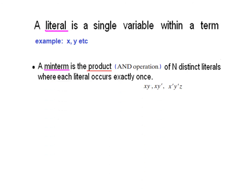A min term is the product, or AND operation, of n distinct literals — n can be 2, 3, 4 — where each literal occurs exactly once. So x·y, or x AND y, is a min term. Similarly, this is a min term of 2 variables and this is a min term of 3 variables. These are all product terms or AND terms.